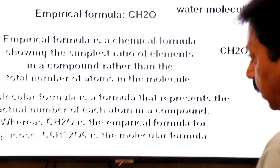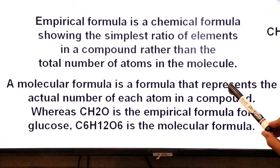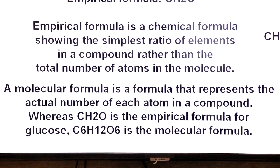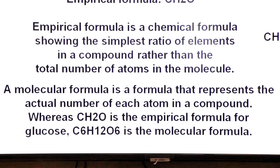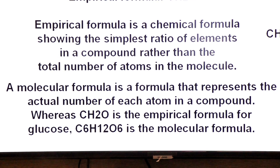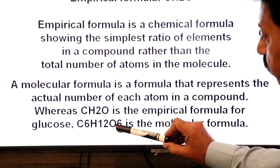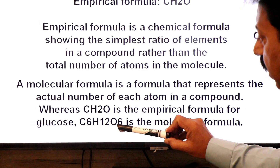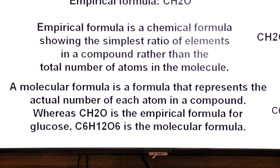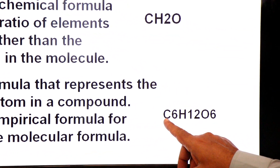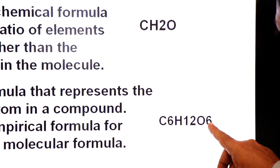A molecular formula represents the actual number of each atom in a compound. Whereas CH2O is the empirical formula for glucose, the full molecular formula of glucose is C6H12O6. So glucose's molecular formula is C6H12O6 and its empirical formula is CH2O.